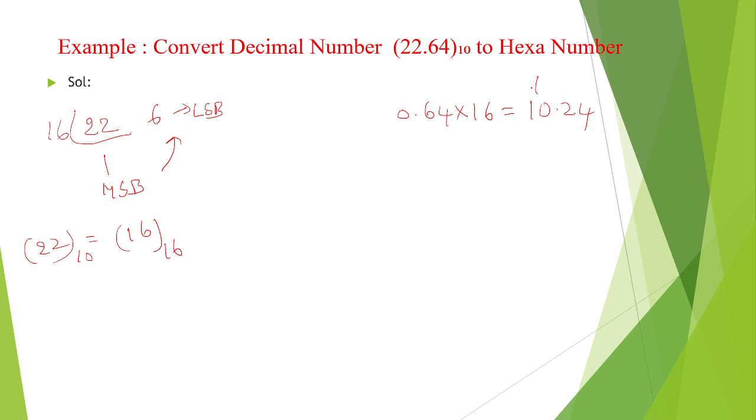So here carry is 10. So take it outside carry, and remaining multiplication factor is 0.24. Again multiplied with 16, is equal to resultant is 3.84. Take carry outside, that is 3.